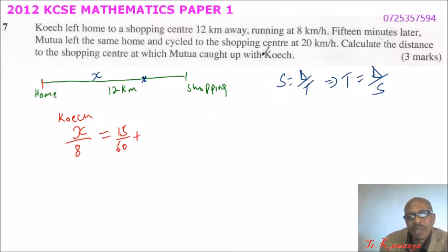And you add the time Mutua did this distance, which is X divided by 20. That is the distance covered, divided by the speed of Mutua. So, that is how now you equate. So, we can take,